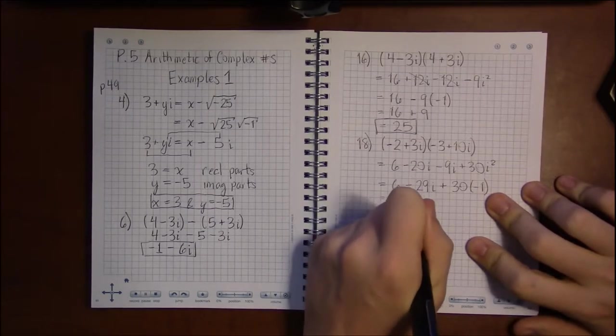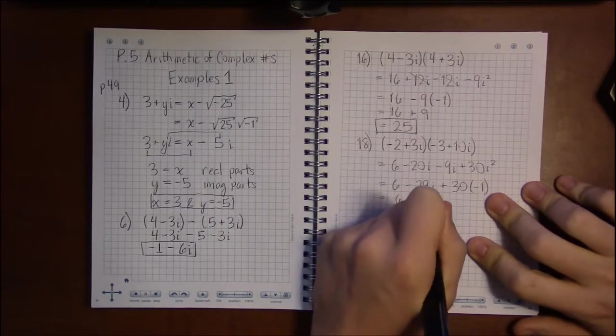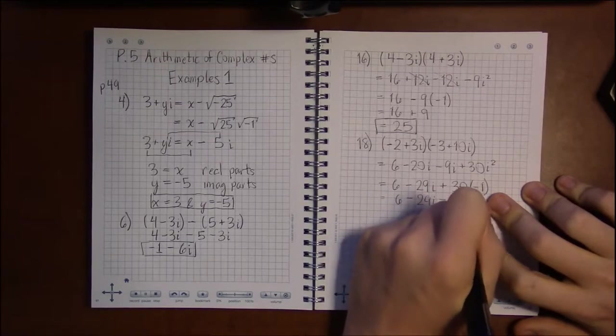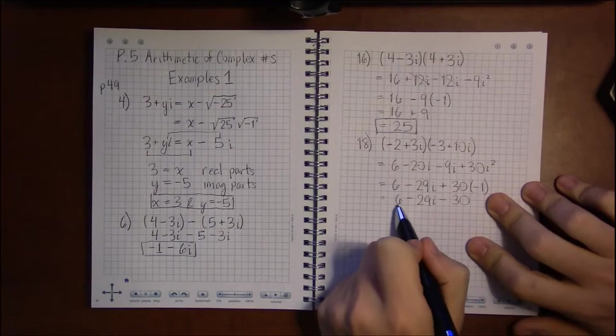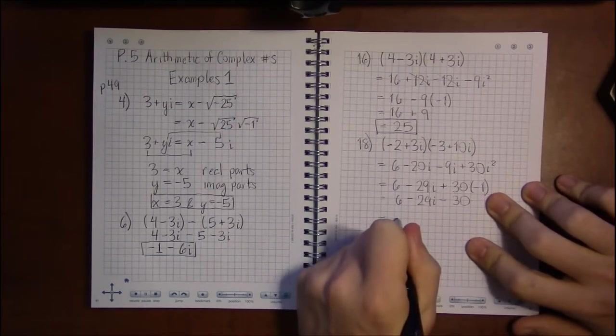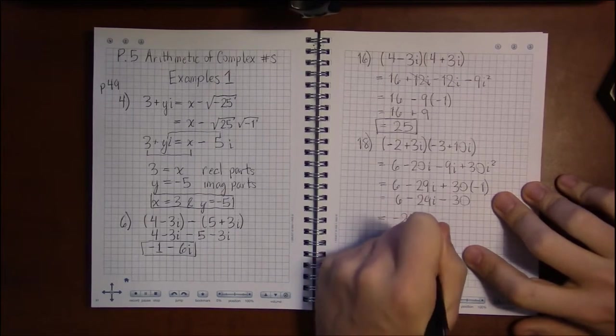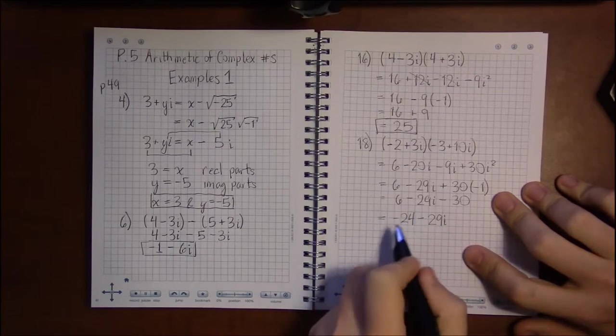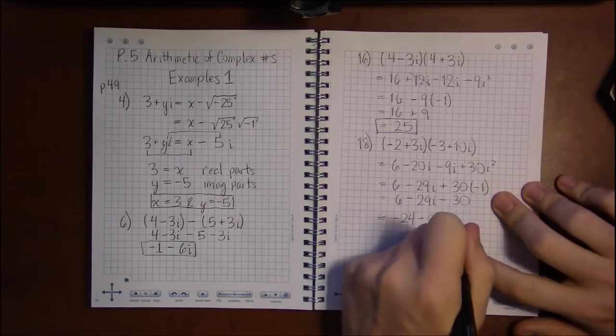So this is really 6 minus 29i minus 30. And now, 6 can combine with minus 30 to give us minus 24. And that's minus 24 minus 29i altogether.